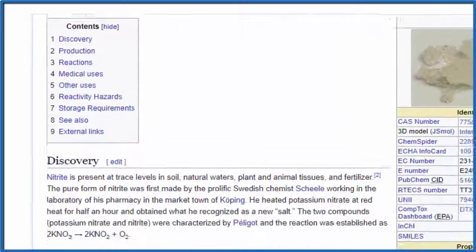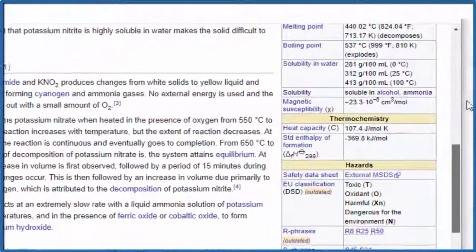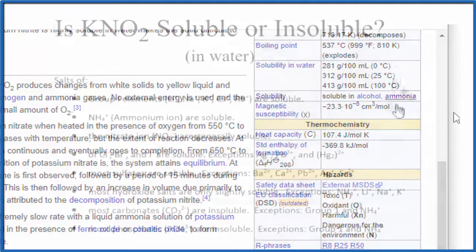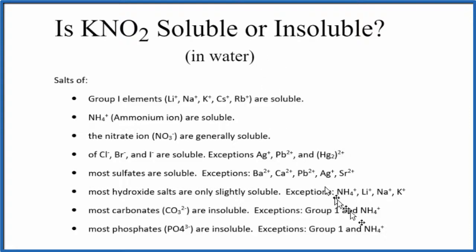We could also look at the experimental data for potassium nitrite. Here on Wikipedia it says it's a hygroscopic crystalline powder that's soluble in water, with a solubility of 281 grams per 100 milliliters of water — that's very soluble. So according to our rules and the experimental data, potassium nitrite is soluble in water.